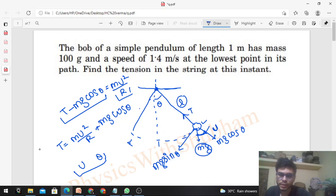Mass is 100 grams, which is 0.1 kg, into v² = 1.4² = 1.96, divided by r = 1 meter, plus mg: 0.1 into g = 10 into cos θ. At the lowest point, cos θ will be 1 because the angle will be 0.